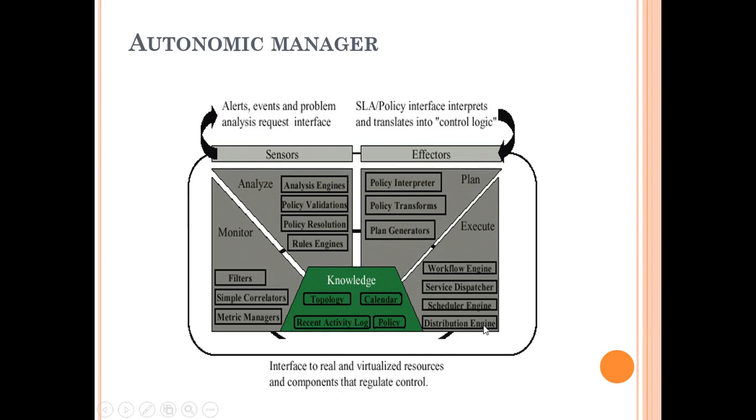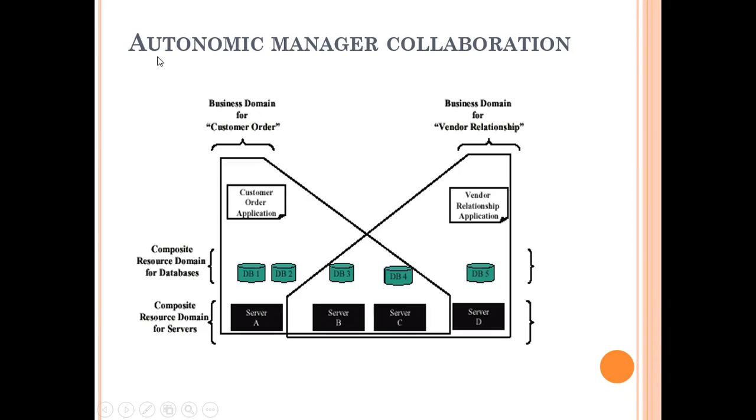To execute, we have workflow engine, service dispatcher, schedule engine, and distribution engine. To monitor, we have filters and metric managers. Of course, knowledge is the basis—from topology, calendar, recent activity log, and policies. This is how the autonomic manager works out. These sensors and effectors are involved for this continuous process.